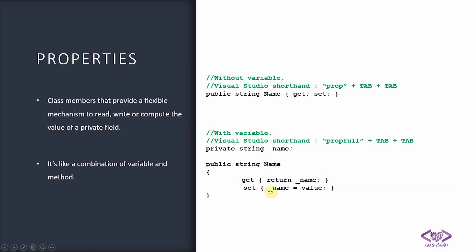In the getter body you return the private variable you declared, and in the setter you assign the private variable to `value`. The `value` keyword is a reserved word — whatever value is set on this property gets stored into that variable. There is also a shorthand in Visual Studio: type `prop` and press Tab twice to get the simple property definition, or type `propfull` and press Tab twice for the expanded definition with a backing variable.